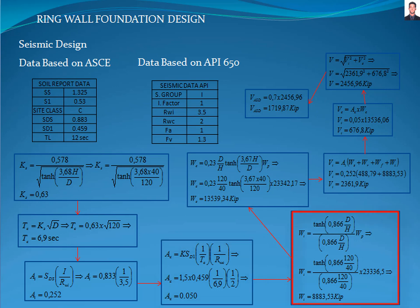Now, we calculate the effective impulsive weight WI with the equation E6.1.1-1, where WP is the weight of the product stored at operational level resulting in 8,885.69 kilopounds.